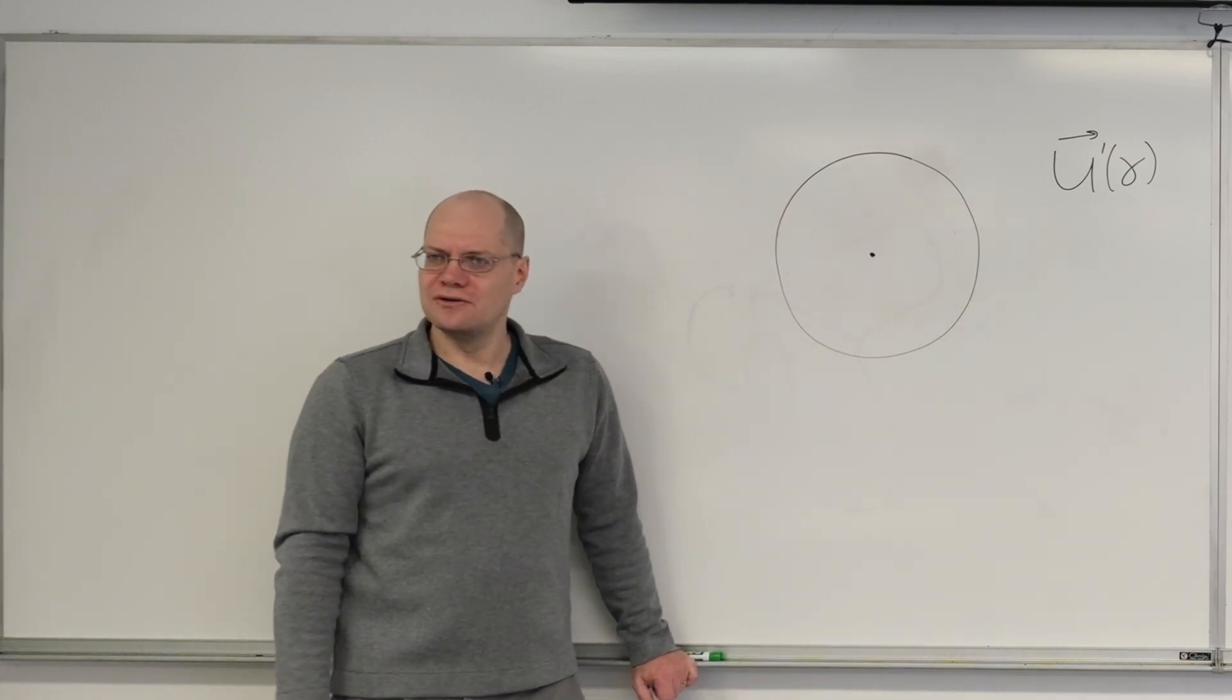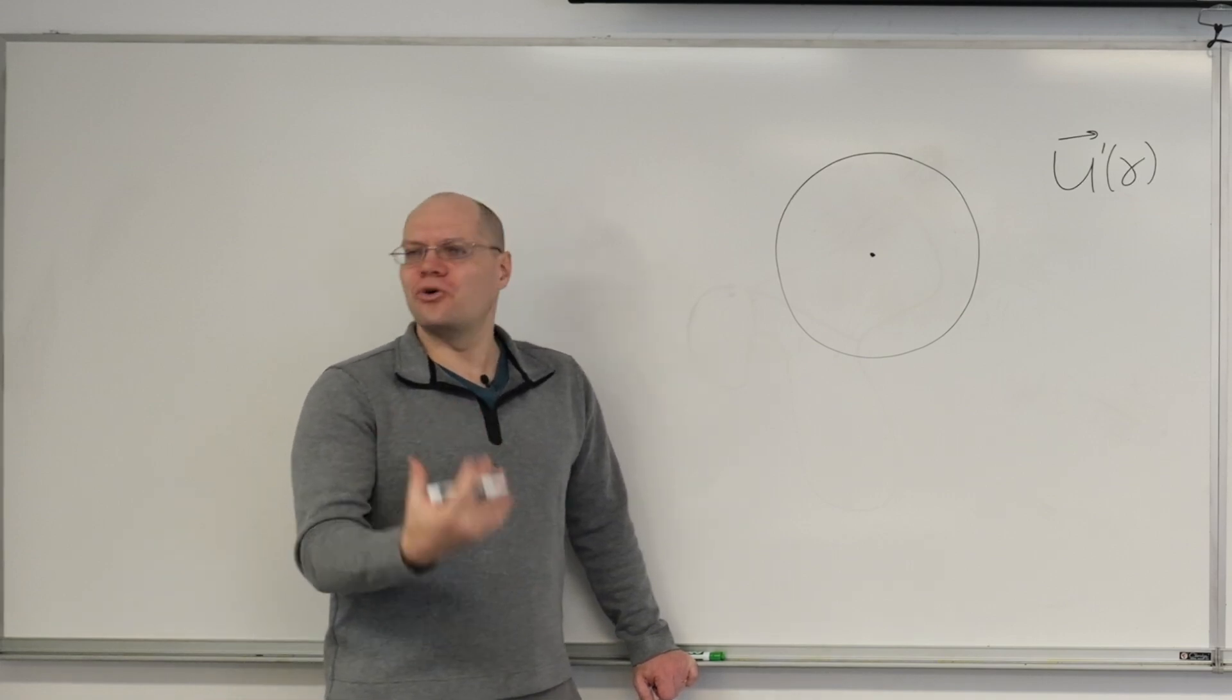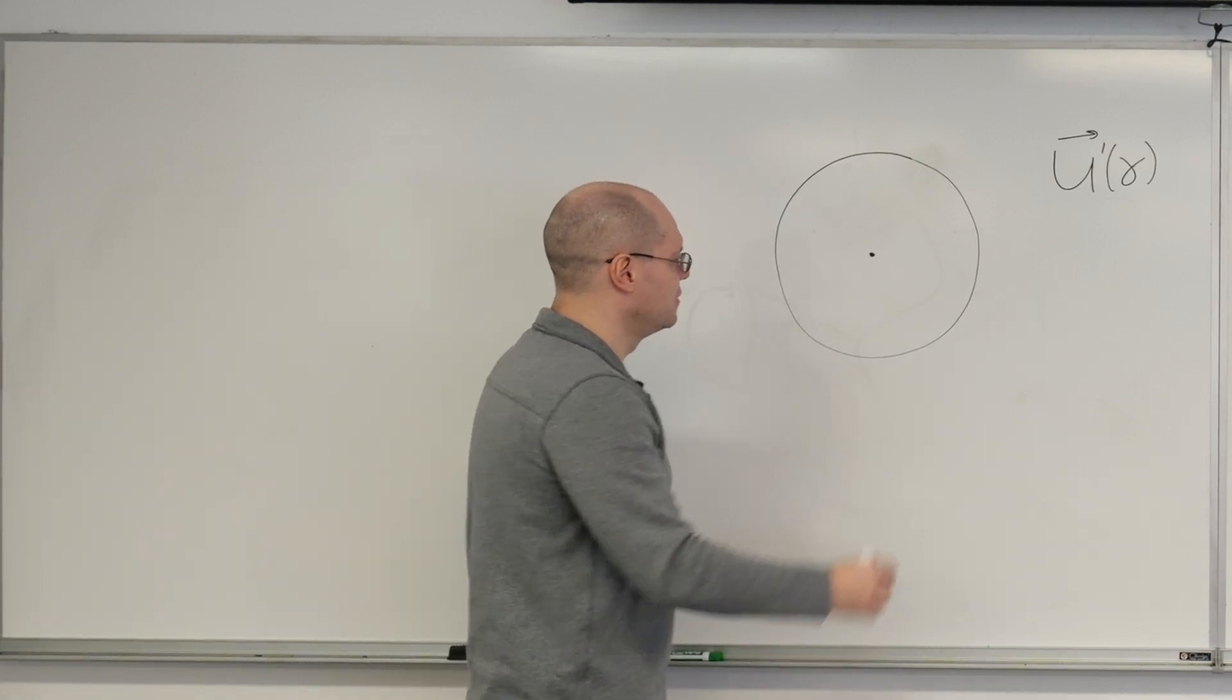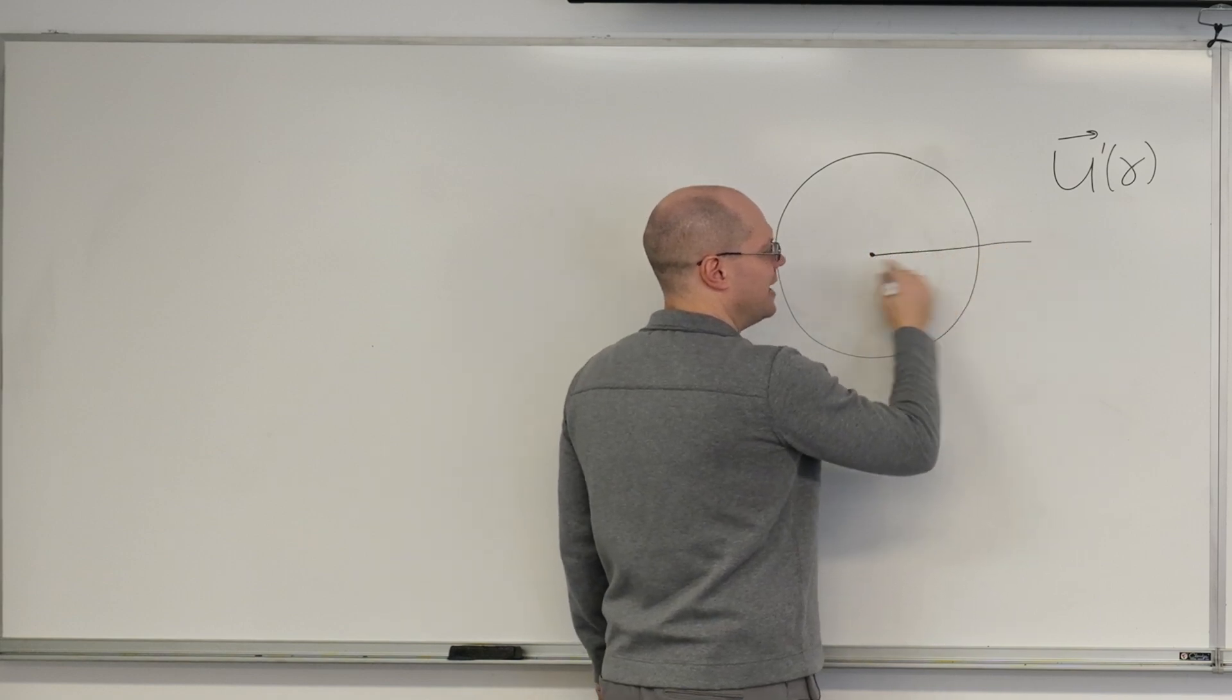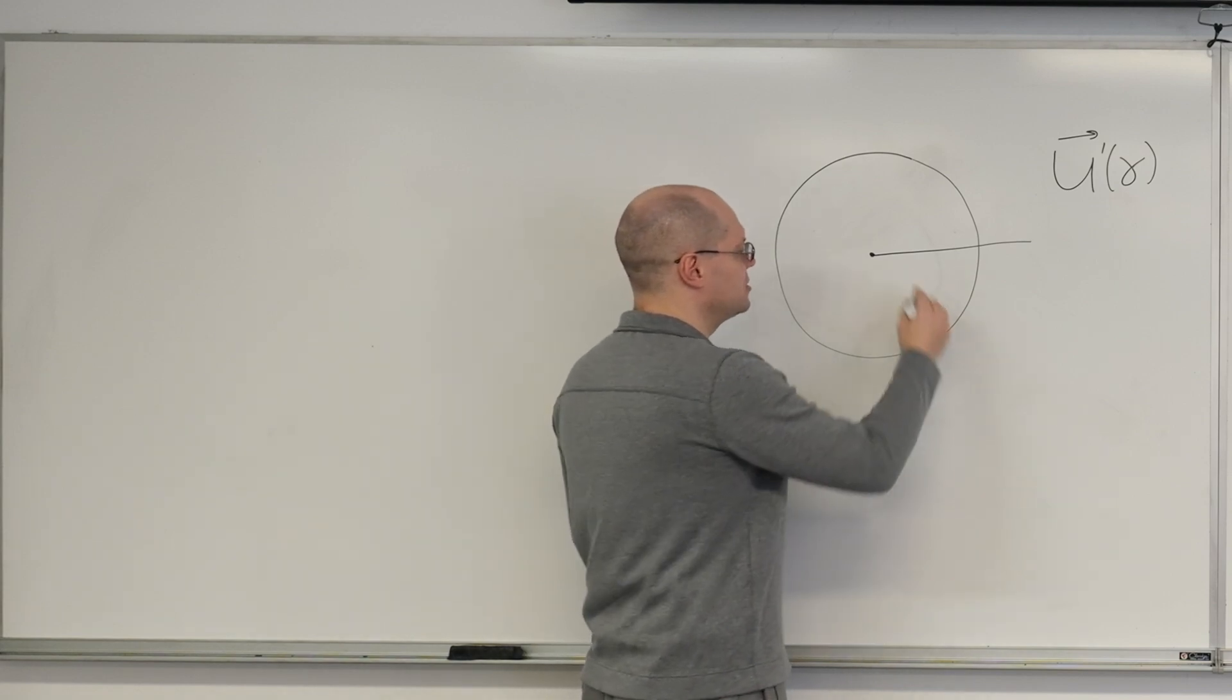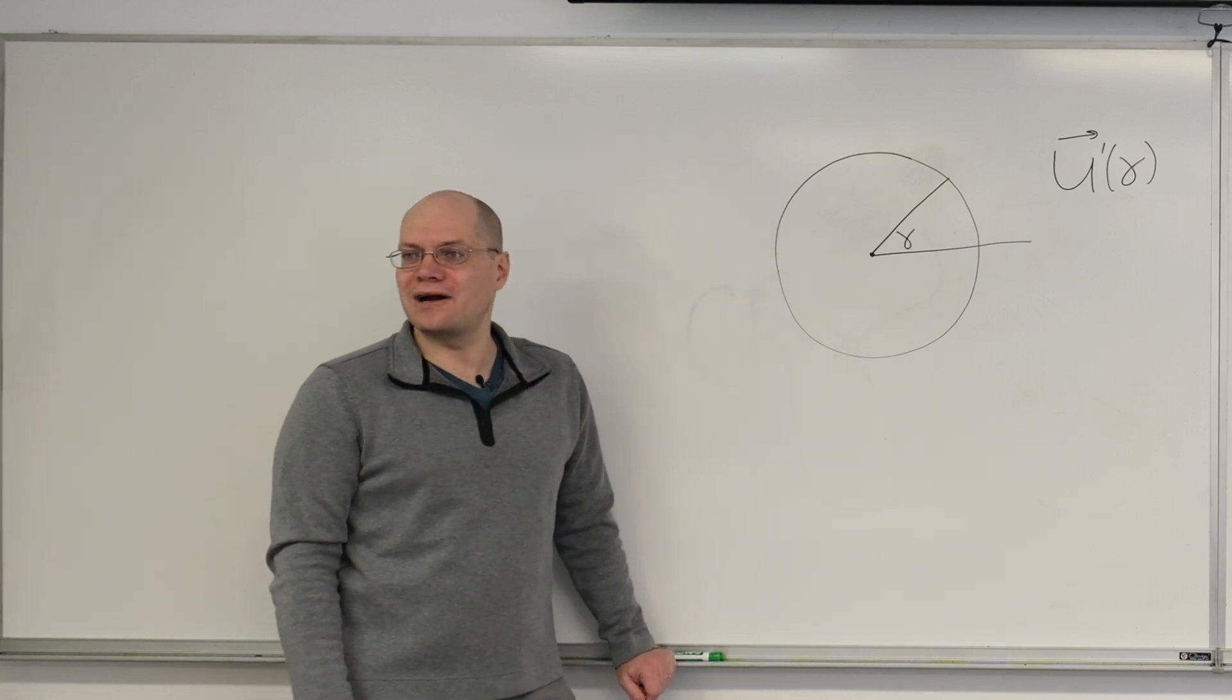Number two, we need a parameter. We need to parametrize the curve. That's our coordinate system on the curve, assigning a number to every point on the curve. So I'll choose an arbitrary line. I didn't mean for it to be horizontal, but it doesn't matter. There's no concept of horizontal. And I'll call gamma this angle. That's my parameter.